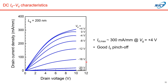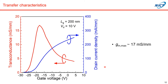This shows typical DC ID-VD characteristics of the gallium oxide MOSFETs we fabricated. This device had a gate length of 200 nm. As you see, we got beautiful ID-VD curves — the drain current was perfectly controlled by the VG bias sweep, and we got good pinch-off characteristics too. The maximum drain current density was 300 mA/mm at a gate bias of +4 V. This shows transfer characteristics of the same MOSFETs with a gate length of 200 nm, measured at a drain bias of 10 V. We got a peak transconductance of 70 mS/mm, which is relatively good for this device structure, and also good controllability of the drain current by the gate bias sweep.